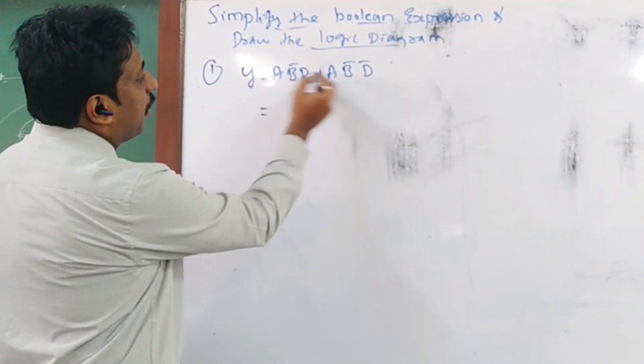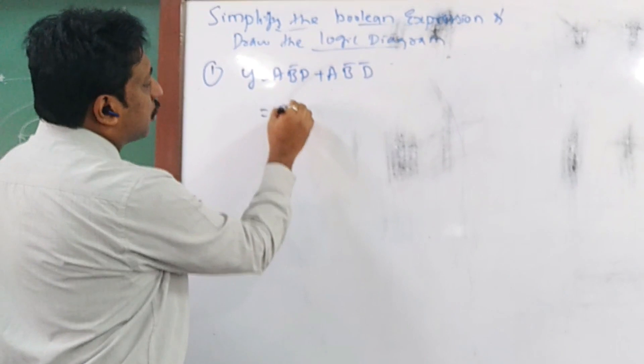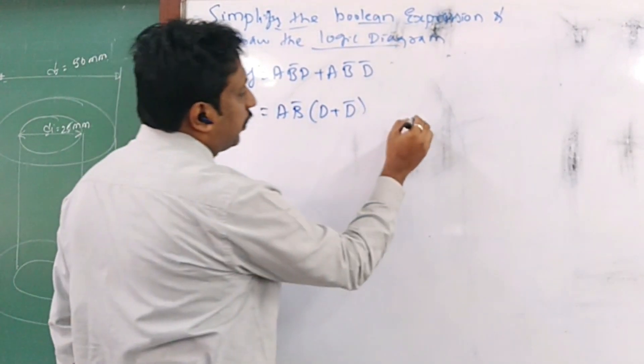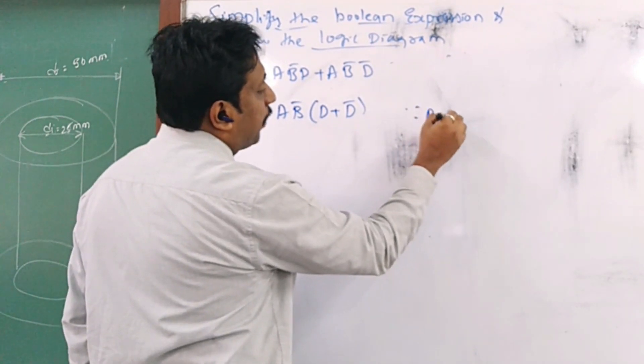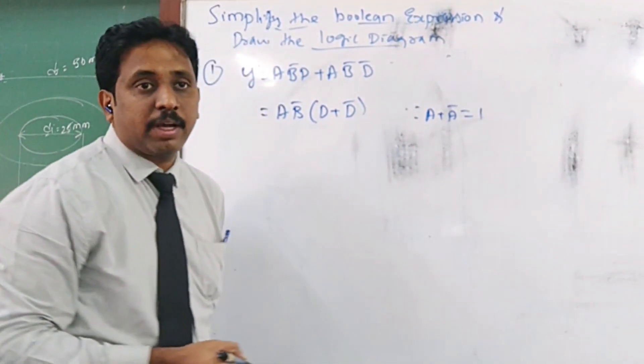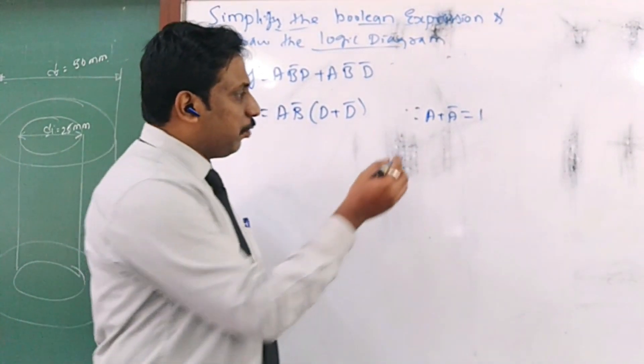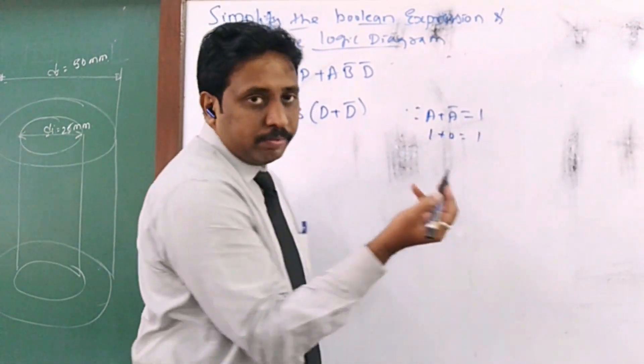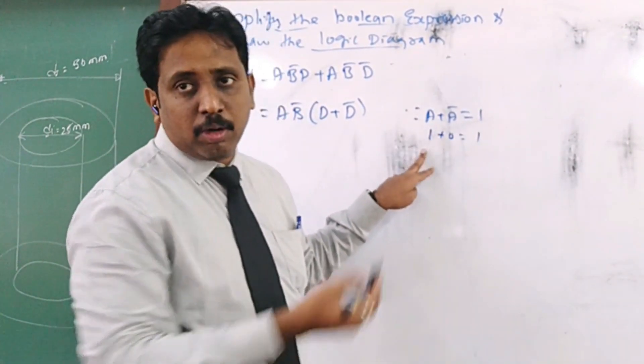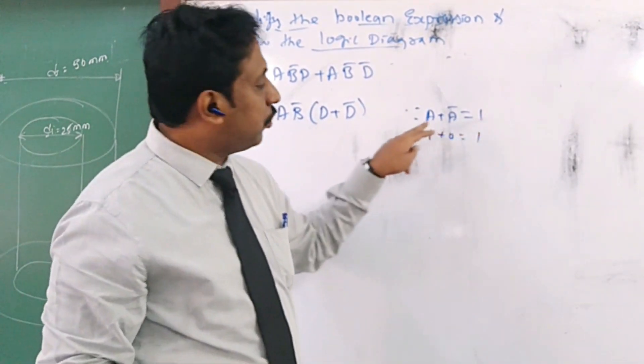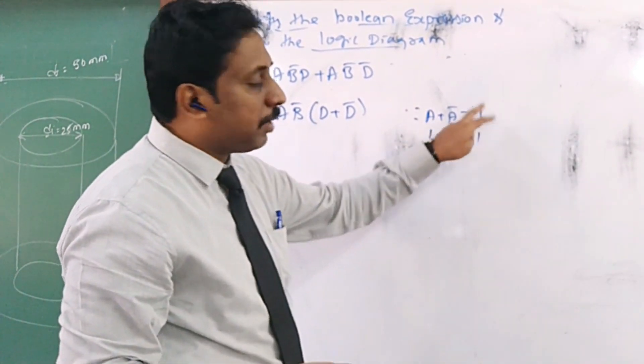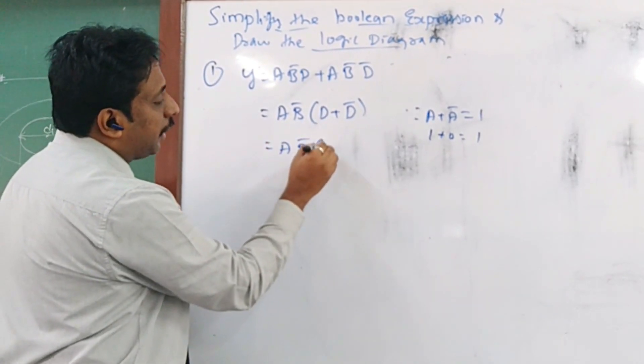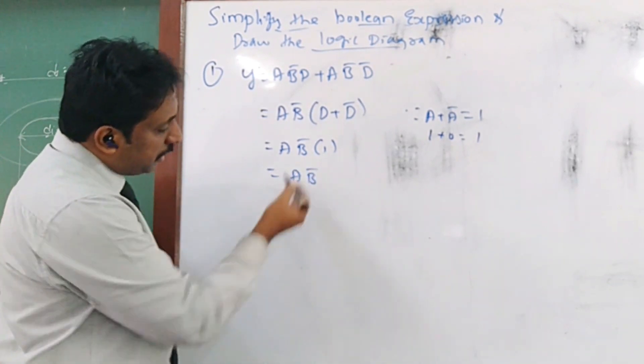So if you take this one, a, b bar is common. So a, b bar is common. I will get d plus d bar. So we are having the expression, you know, a plus a bar is equal to 1. What is the value? 1.